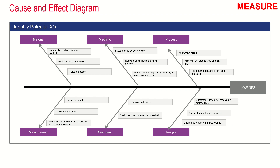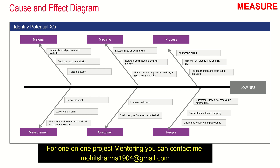The team then conducted a brainstorming session to identify why the NPS score is low. Under People: aggressive billing, missing turnaround time on daily SLAs, non-standard feedback process to the team, customer queries not resolved in a defined time, associates not trained properly, unplanned leaves during the week, forecasting issues, and customer type — whether commercial or individual. Under Machine: system issues causing delays, network downtime, and printers not working — leading to delayed gate passes and late product delivery to the end customer.